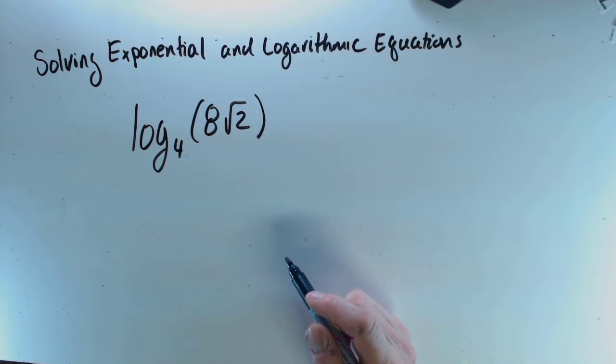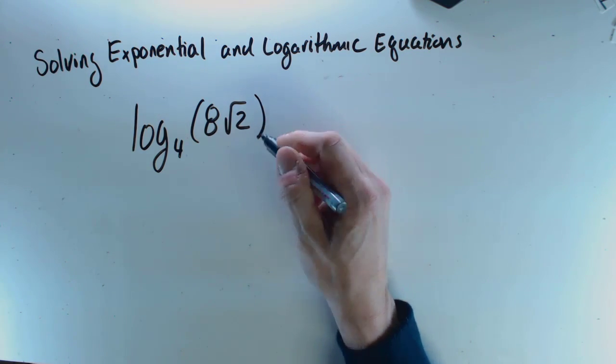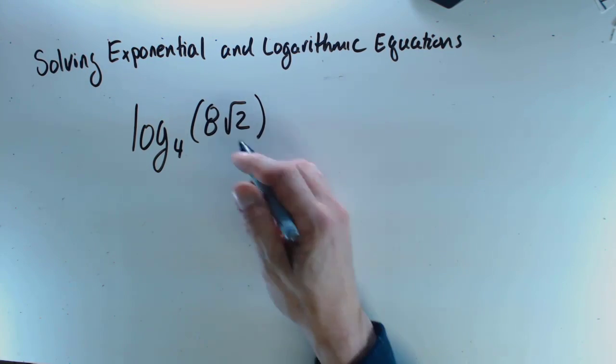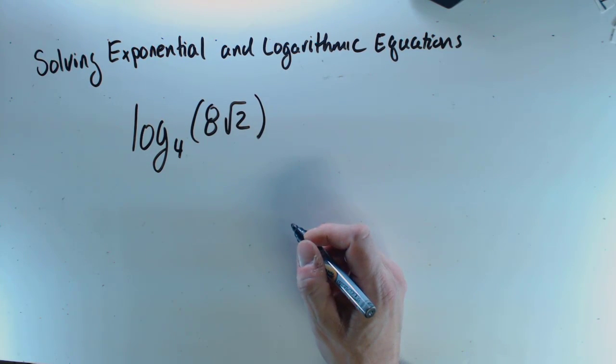Okay, so here's one of these logarithmic equations that we solve by turning it into an exponential relationship. And so this means 4 to some exponent that I don't know is equal to 8 times square root of 2.